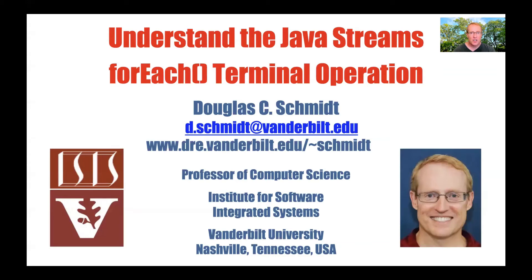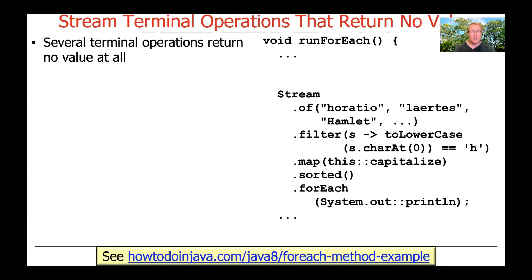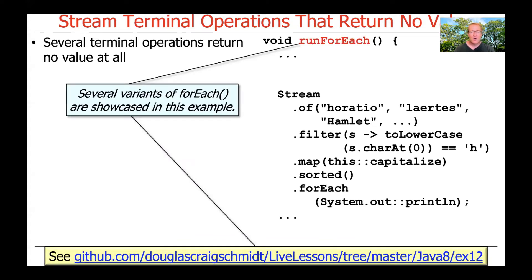We're going to start our coverage of terminal operations by focusing on the for-each family of terminal operations, and we're going to do this in the context of our Hamlet program, which is the one we've been looking at in the EX12 folder. We'll look at both for-each and for-each-ordered, with an emphasis on for-each because it's more straightforward and not that different from for-each-ordered except for the ordering property.